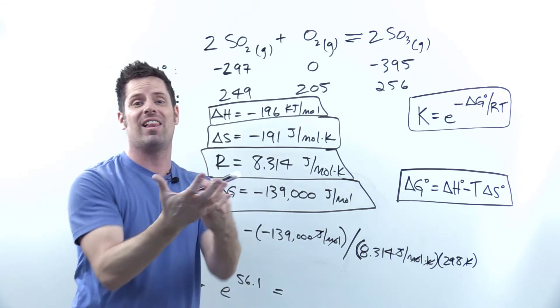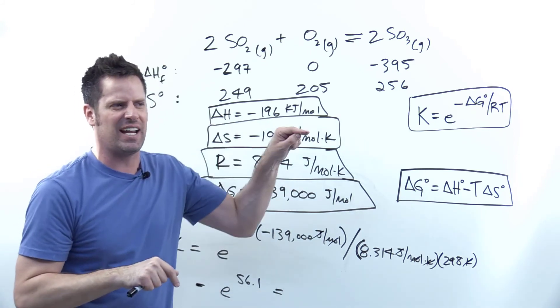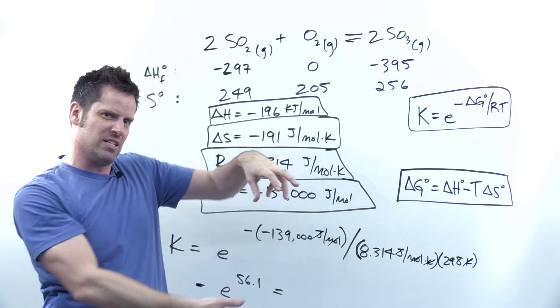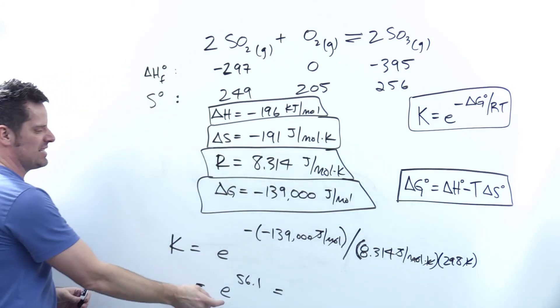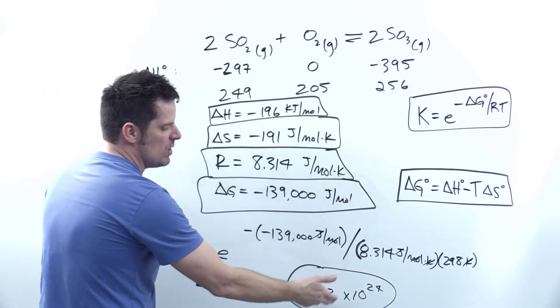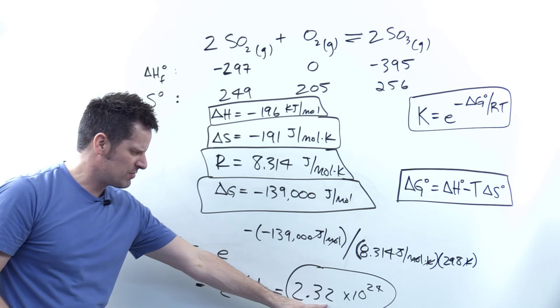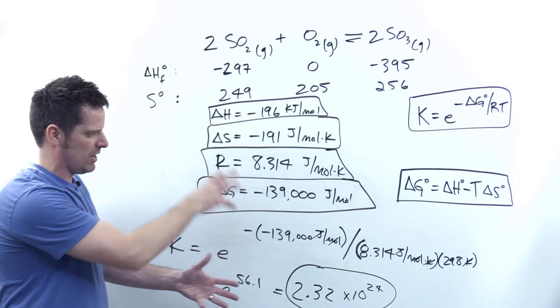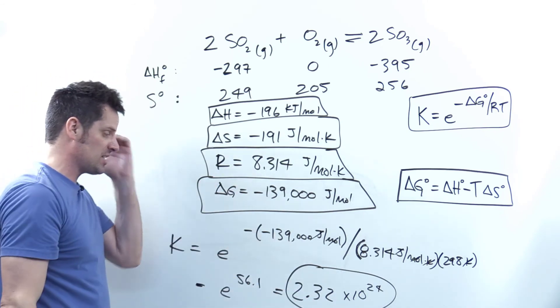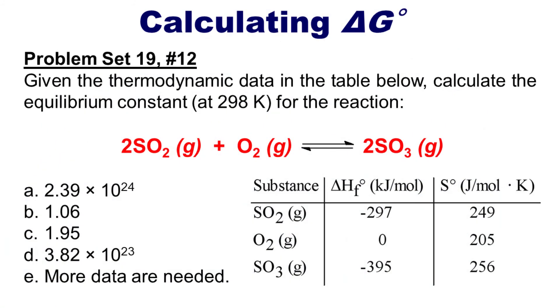You might have to hit second and then the natural log button to find Euler's number. I take Euler's number raised to 56.1 and end up getting around 2.32 times 10 to the 24. This number might vary slightly depending on where you rounded. Of our multiple-choice lineup, the one that matches most closely is answer A.